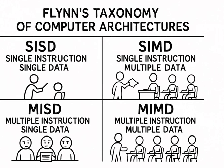What if we could classify all types of computers based on how they process instructions and data? Welcome to Flynn's Taxonomy. Flynn's Taxonomy classifies computer systems based on how many instruction and data streams they handle at a time. There are basically four types.